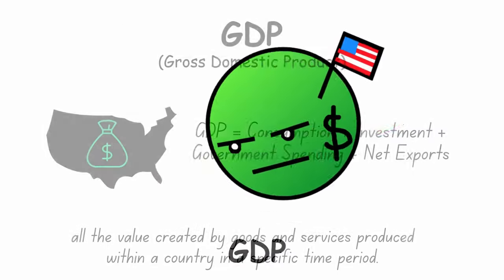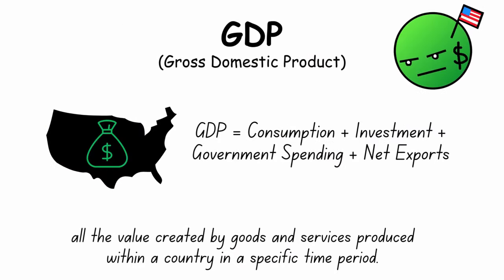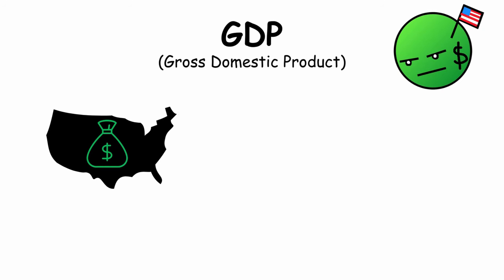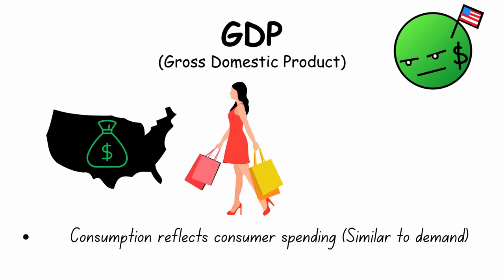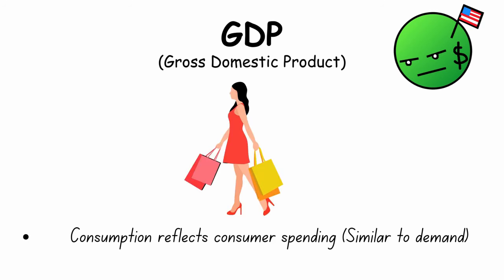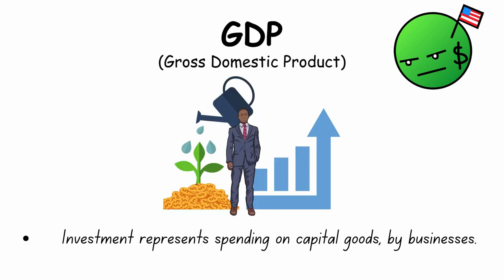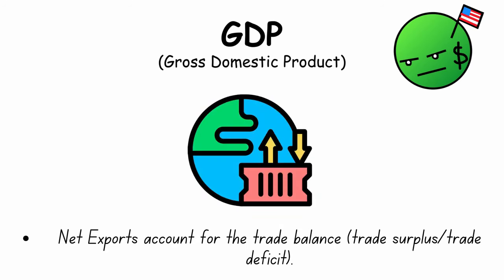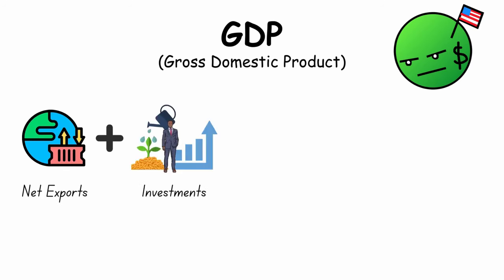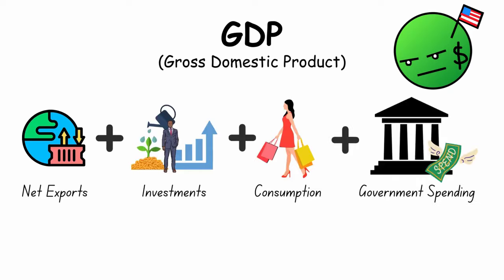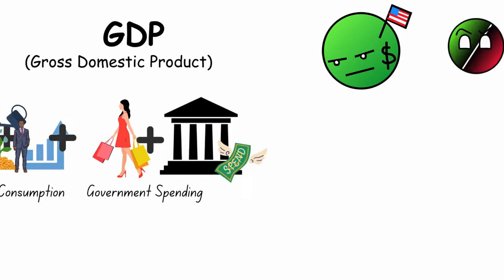GDP, or Gross Domestic Product, is all the value created by goods and services produced within a country in a specific time period. We calculate GDP by adding consumption, which reflects a consumer's spending, with investments, represented by business investments, and net exports, which is the trade balance. Adding net exports with investments, with consumption, and with government spending, we get GDP.